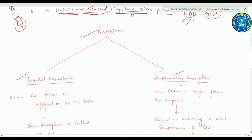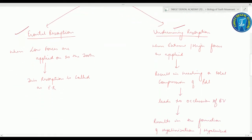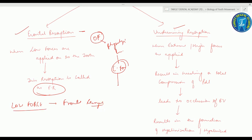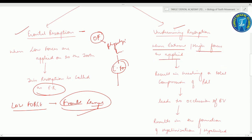Next are the two types of resorption: frontal resorption and undermining resorption. Frontal resorption occurs when you apply an orthodontic force within its physiologic limits, i.e., when you apply a low force onto the tooth. So low force leads to frontal resorption. When you apply extreme or high forces onto the tooth, it leads to undermining resorption.